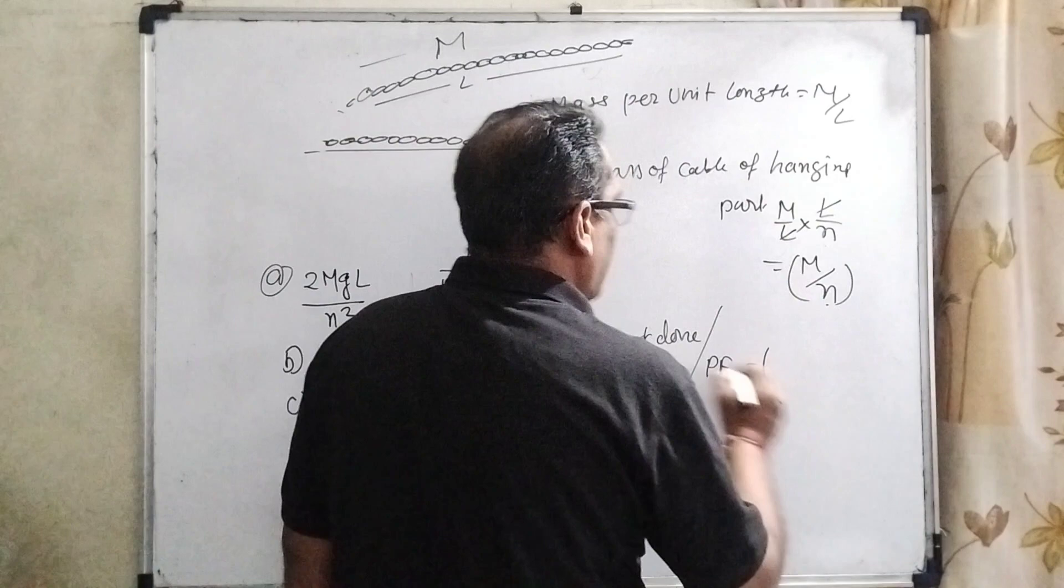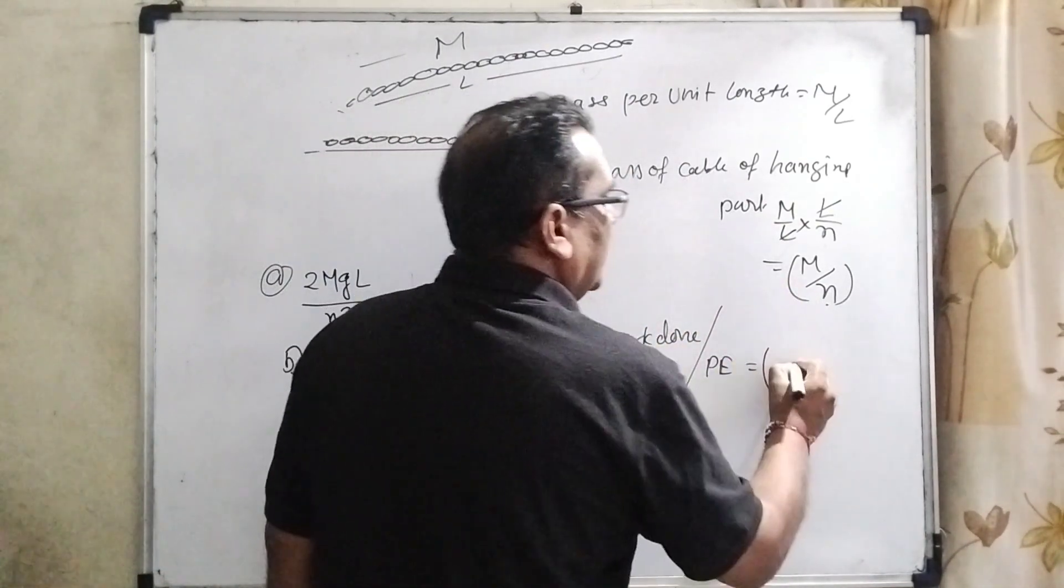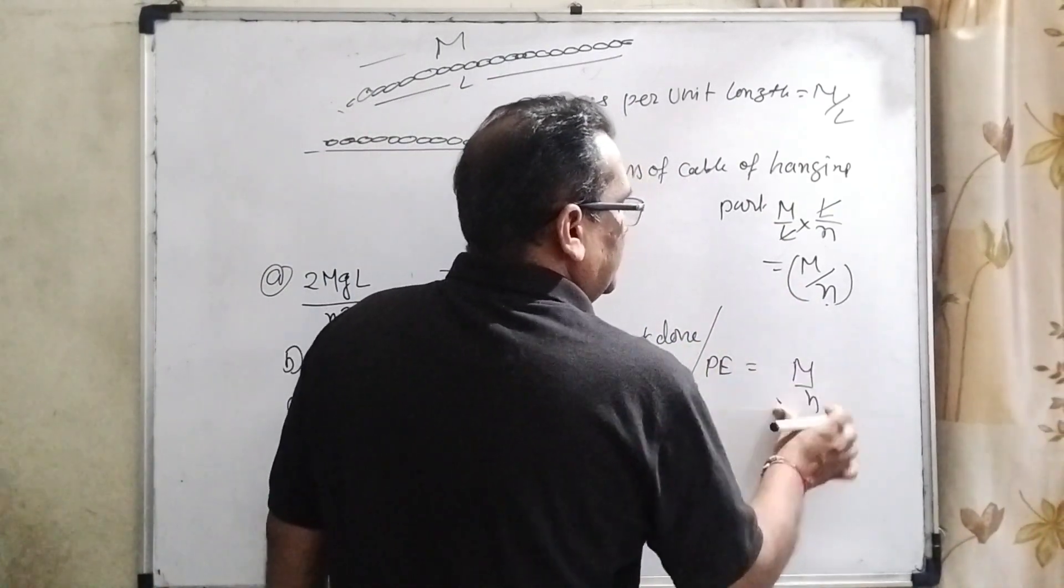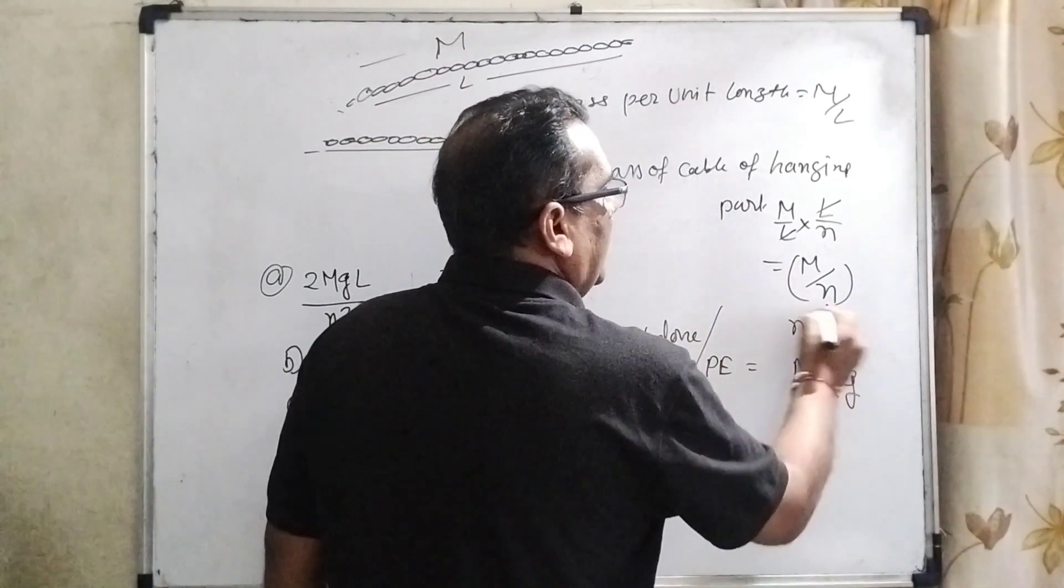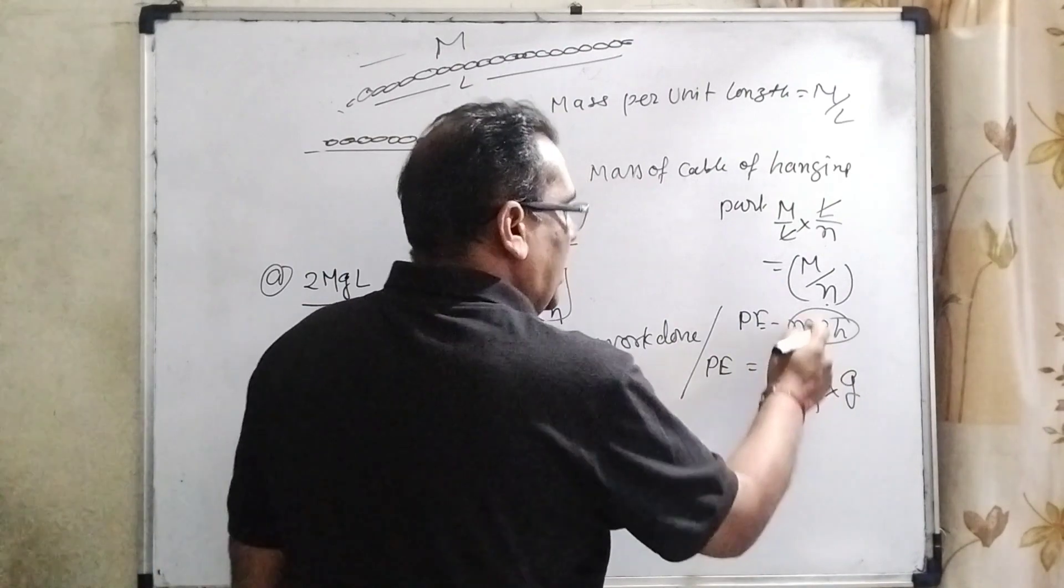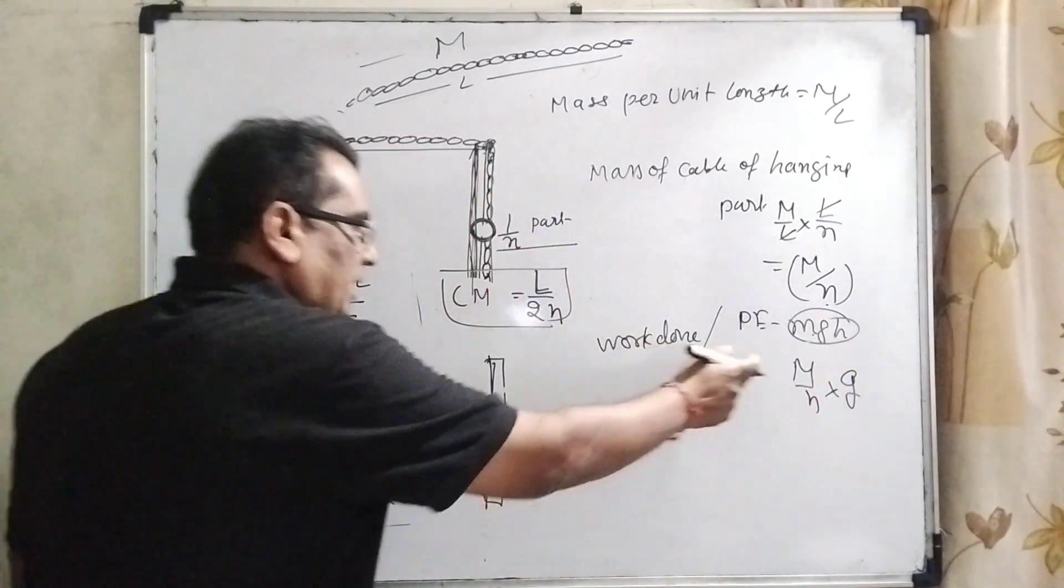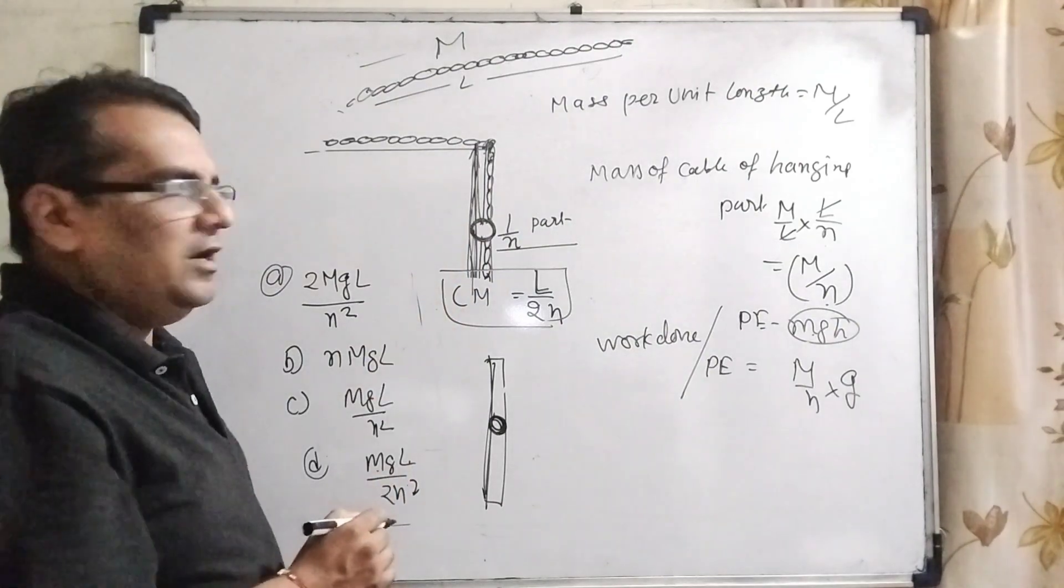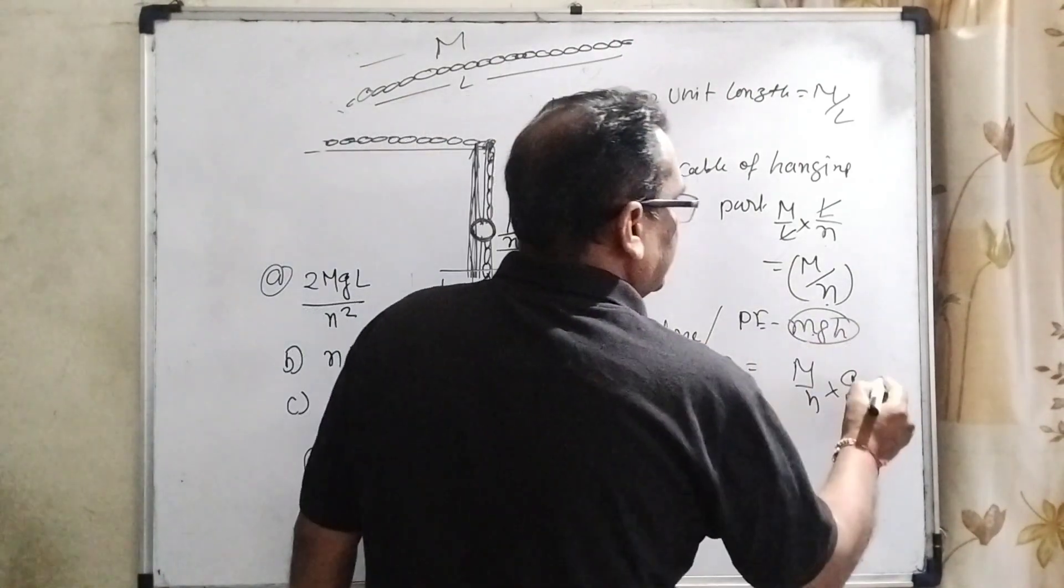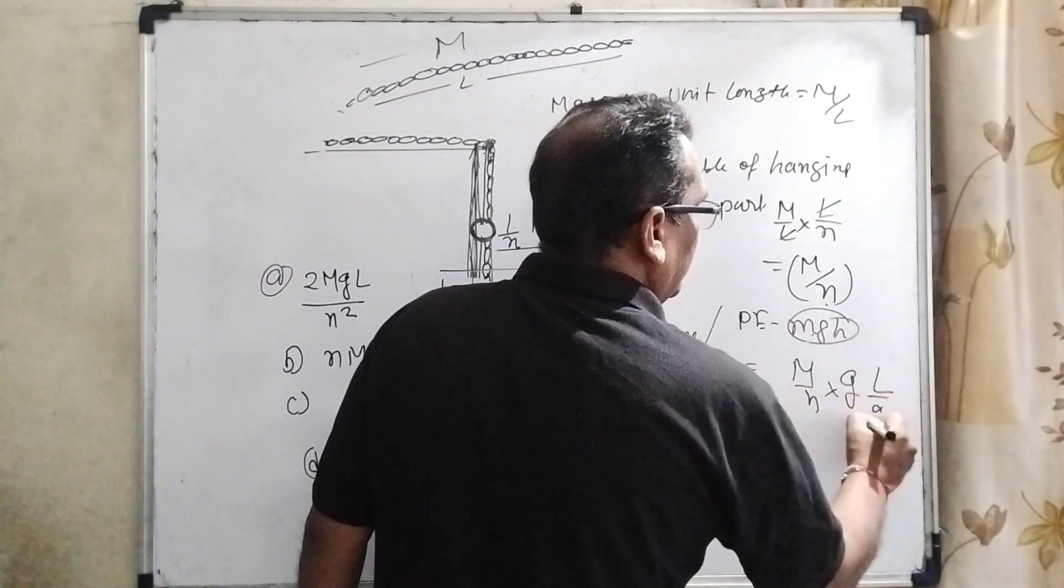So therefore what is the mass of hanging cable? Total M by N. Potential energy is MgH. We are using this concept. So here mass of this hanging cable is M by N times g, and what is the height from the center of mass?